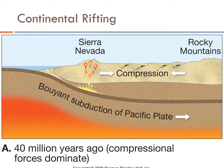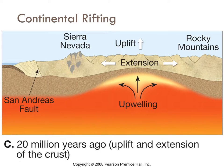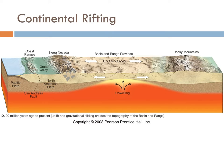Going back to that subducting Farallon plate off the coast of California that formed the Sierra Nevada: as it was subducting, you had the Sierra Nevada volcanic arc forming and it was also pushing up the Rocky Mountains through compressional stress. But at some point that plate boundary changed. What that does is it actually sets up a period of tension — as that subducting plate pulls down, it starts stretching everything out behind the Sierra Nevada, causing extension and uplift and those lovely normal faults to make the Basin and Range Province we know today.